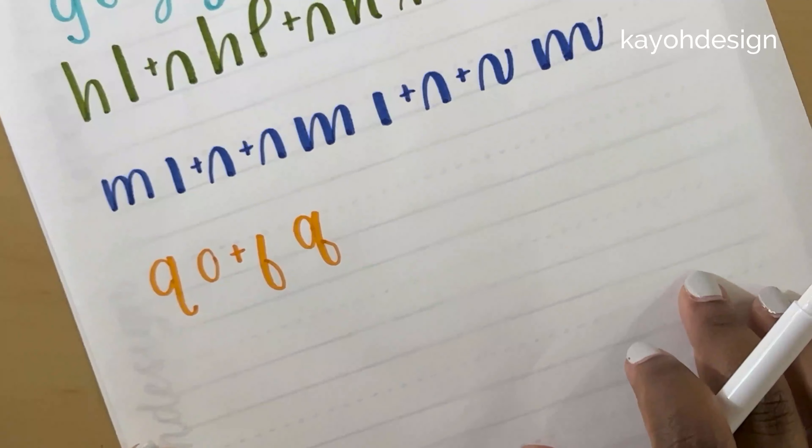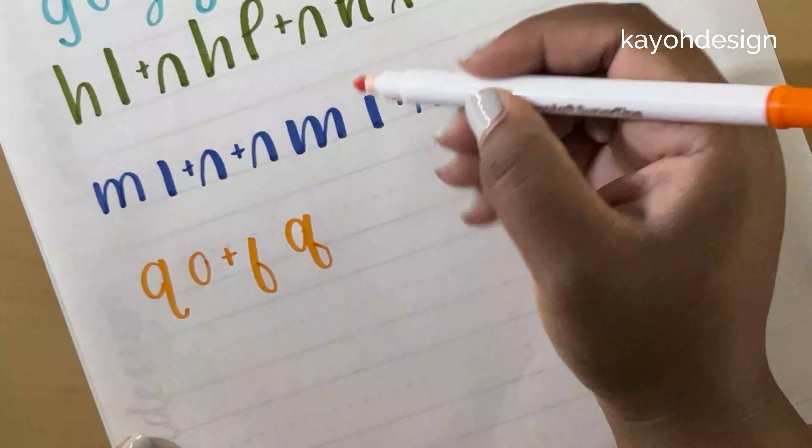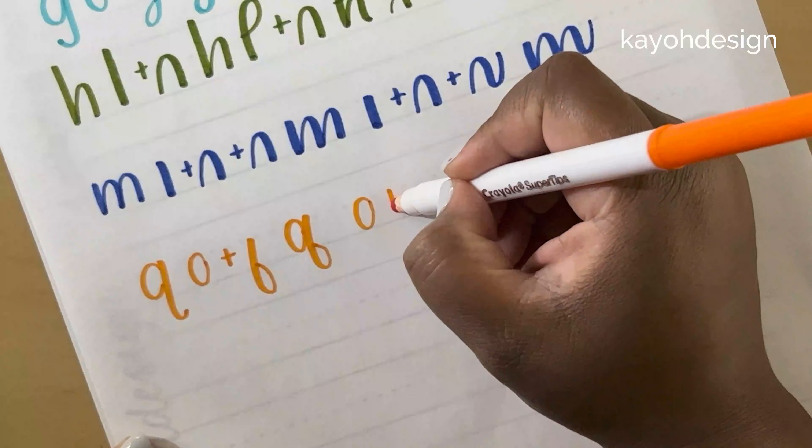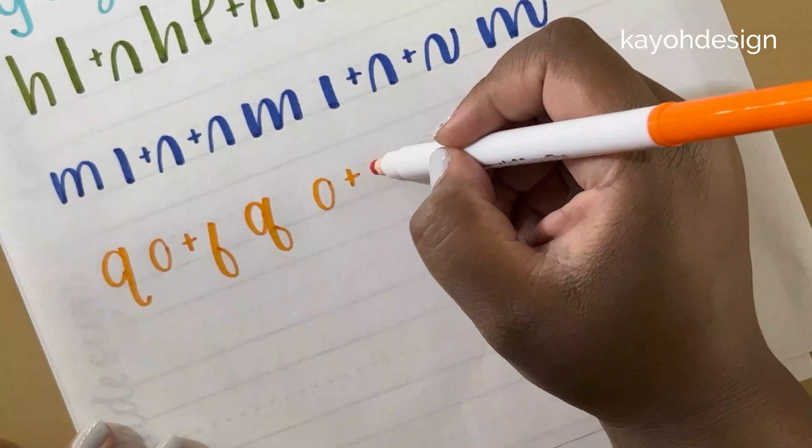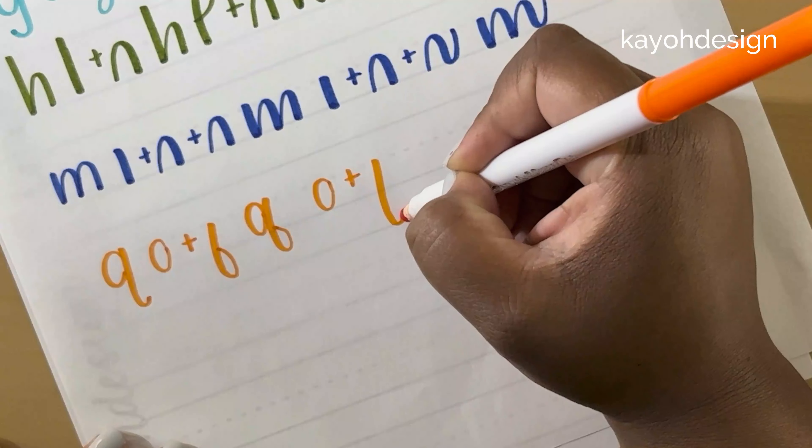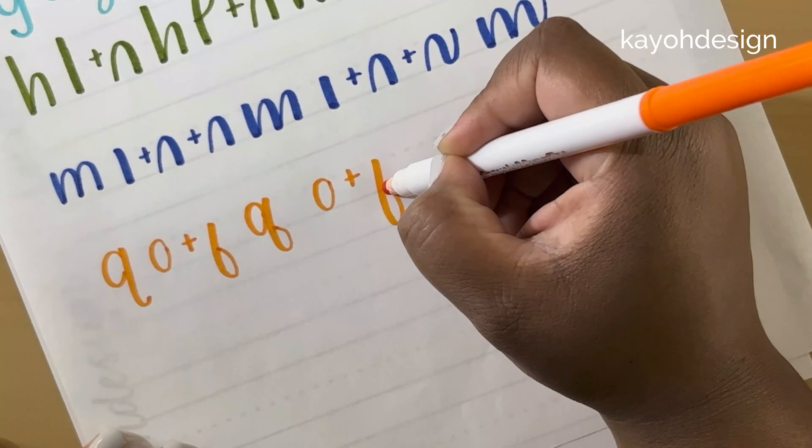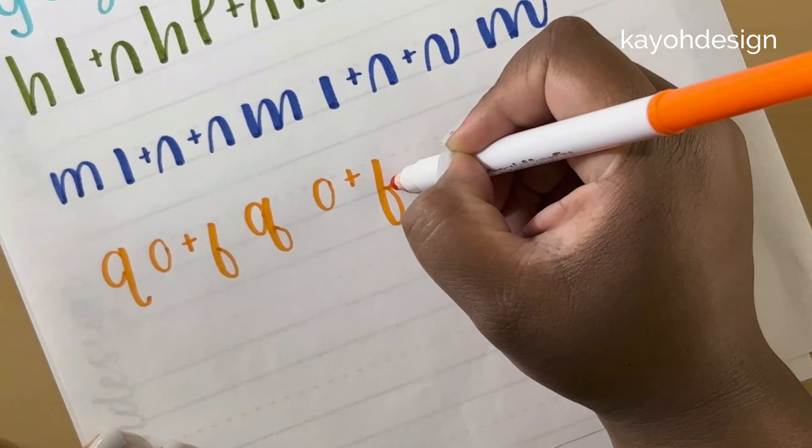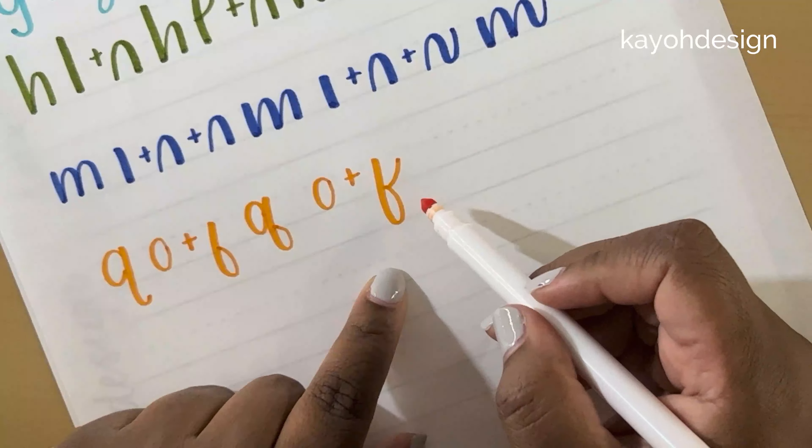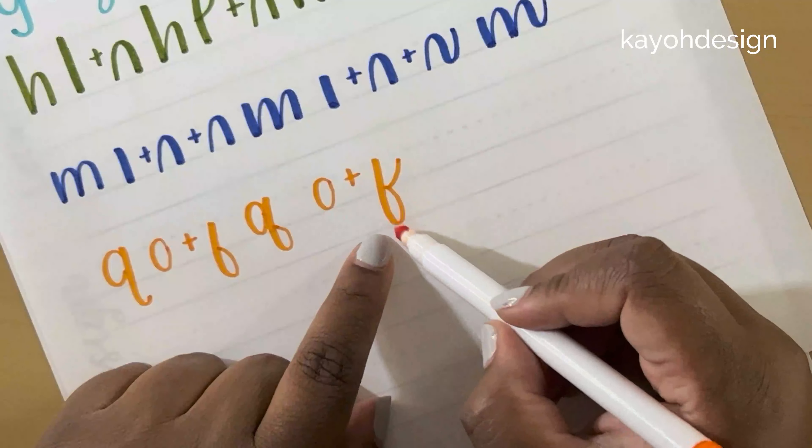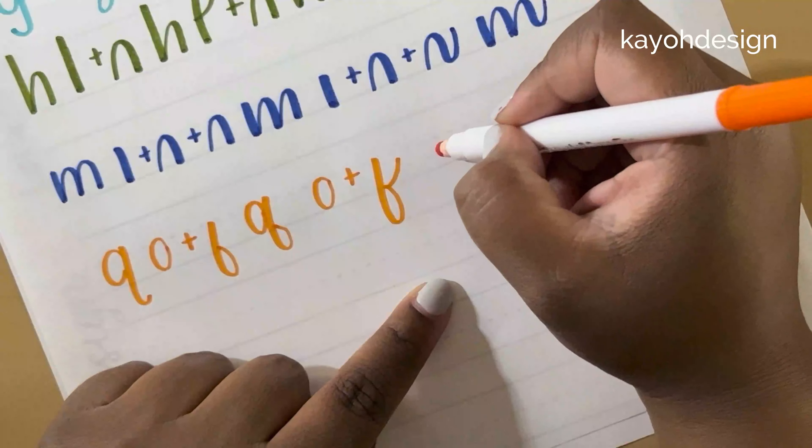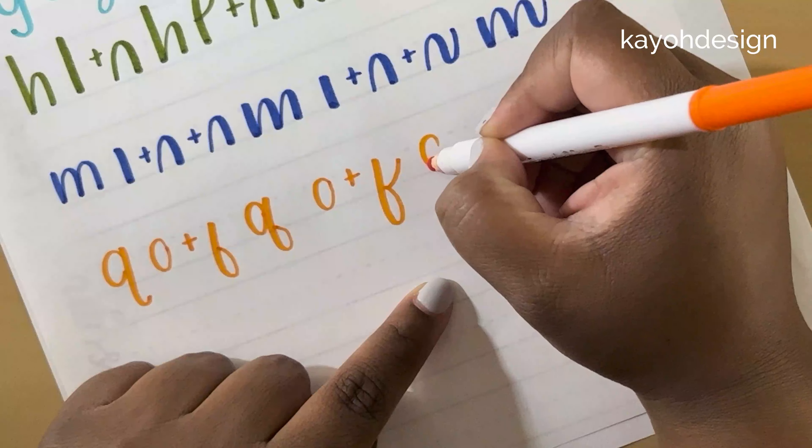Another way that you can draw a Q would be, again, with the oval plus the descender loop. But when you get to the middle point, you just bring that up, kind of like an F. So it's an oval plus the descender plus an extra upstroke, which would give you...